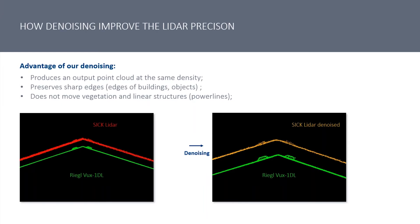The second advantage is to preserve sharp edges. In spatial projects that contain lots of objects — buildings, houses, power lines, or any infrastructure that has sharp edges — this module can help to identify and preserve those sharp edges. The last advantage is that this module will not move any vegetations and linear structures. It will keep these important details, especially for structures like power lines, which can then be used for specific applications.